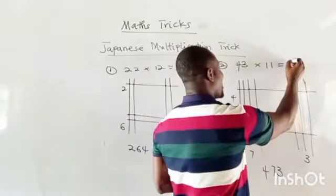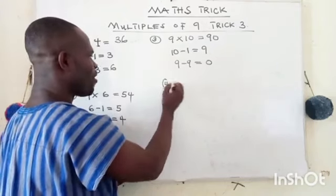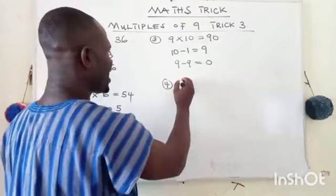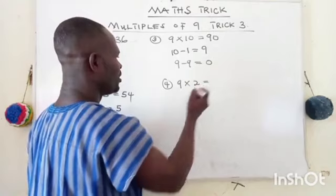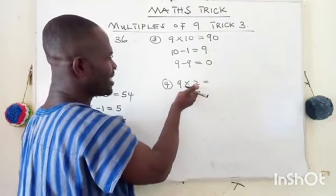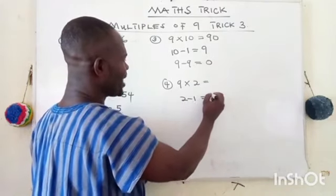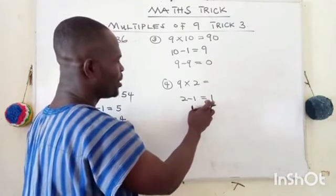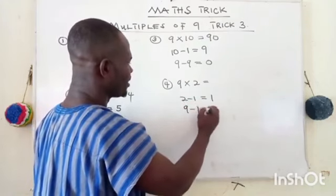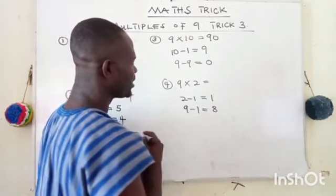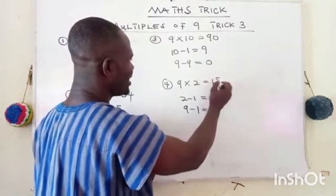So our answer is 473. So 43 times 11 gives us 473. Another example — example four: 9 times 2. So we subtract one from the last number: two minus one gives you one. Then we subtract that one from nine — nine take away one gives you eight — which means that 9 times 2 is 18.